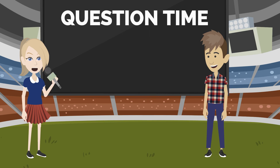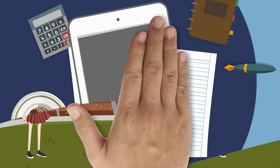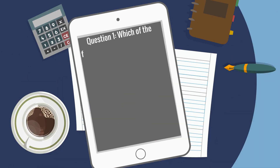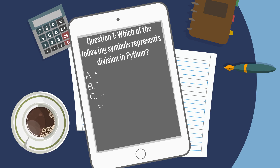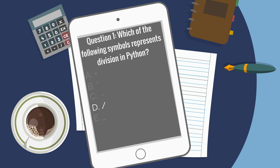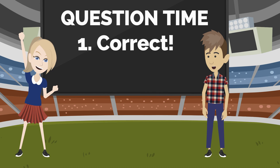Question time again! Question one: which of the following symbols represents division in Python? A, plus sign. B, asterisk. C, hyphen. D, backslash. E, underscore. The answer is D, backward slash. That's correct.